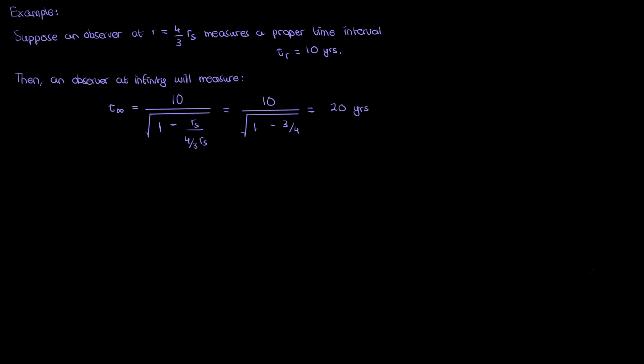What does this mean? Well it means that if the observer at 4 over 3 r sub s ages by 10 years, the observer at infinity ages by 20 years, so the far away observer is aging twice as much. This is basically gravitational time dilation. Clocks that are deeper in a gravitational field run slower.